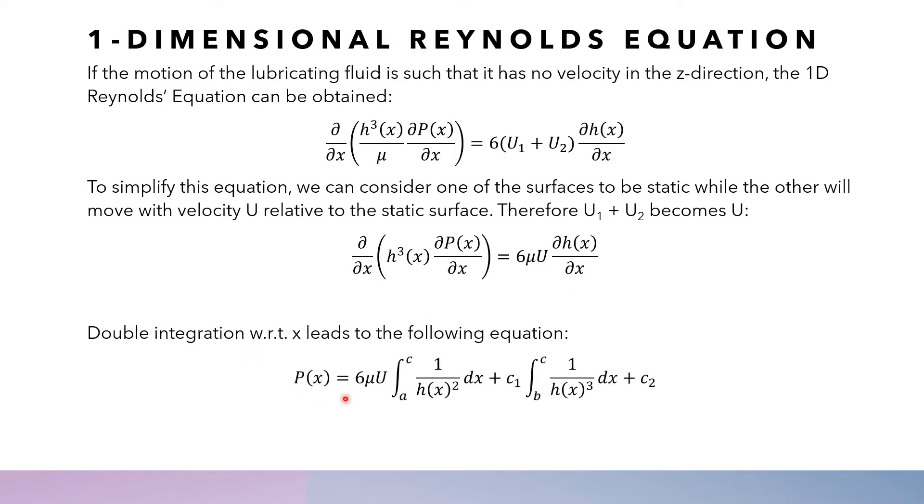The pressure equals 6μU multiplied by this integral here. In this case, A and C are points on the x-axis, plus C1 multiplied by this integral plus C2. C1 and C2 are integration constants which can be worked out.